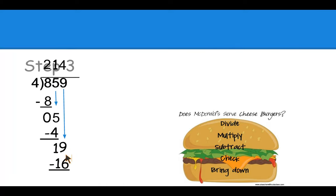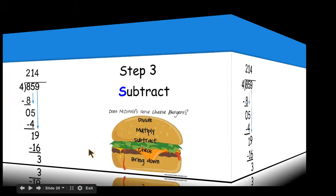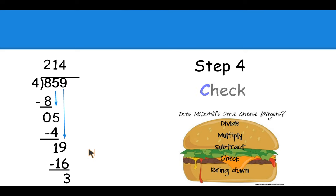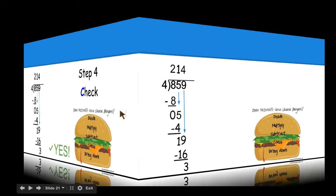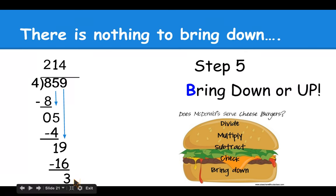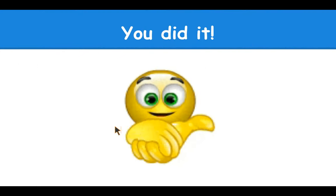Step three, subtract 19 minus 16. We get three. Next step, check. Three is smaller than four. And step five is bring down. But there's nothing left to bring down. So in this case, we're going to bring up. So we bring the three up. That is our remainder. We use a capital R for remainder three. And you did it.